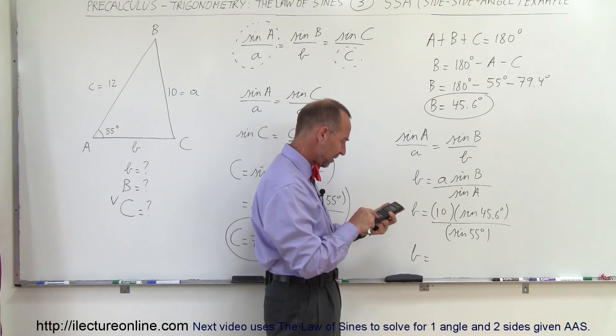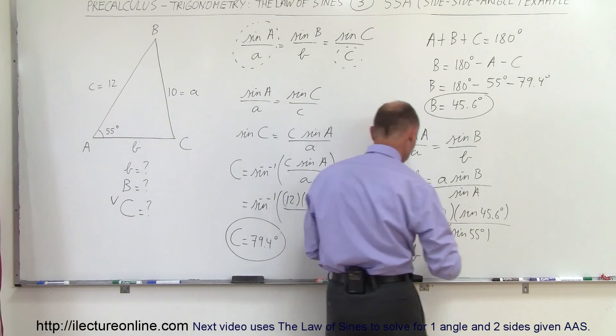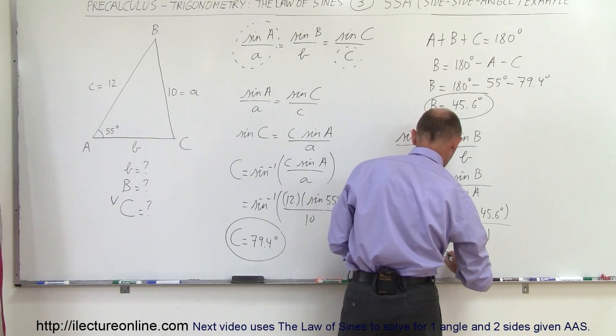So 45.6, take the sine of that, and divide by the sine of 55, and then multiply times 10, and I get 8.7. So B is equal to 8.7.